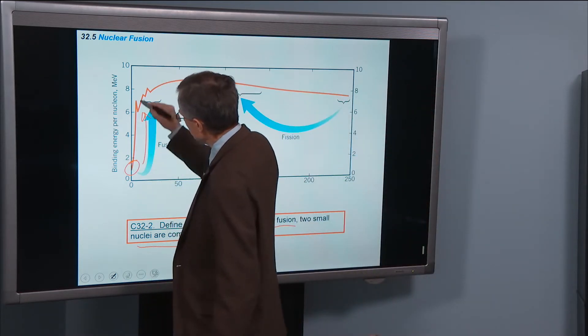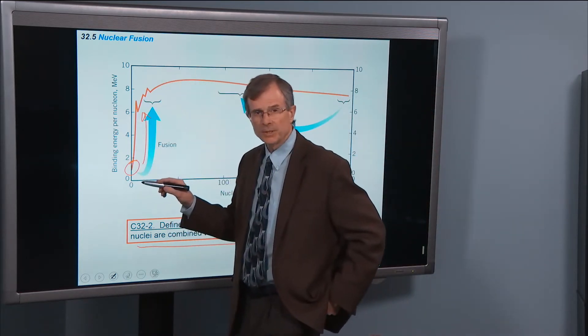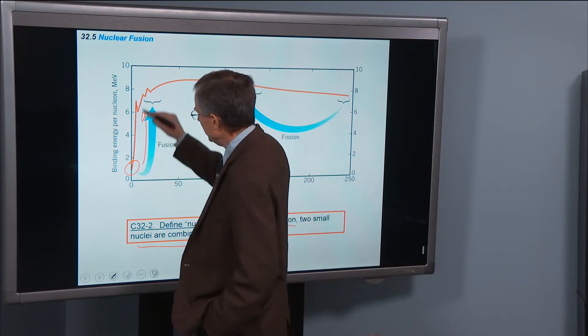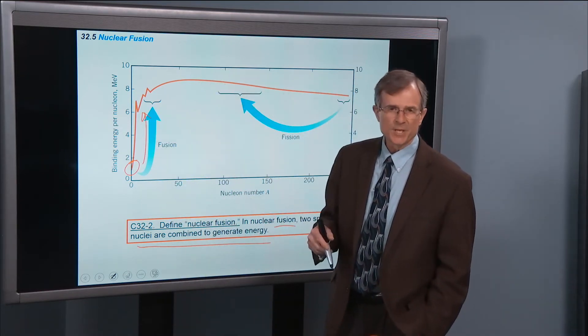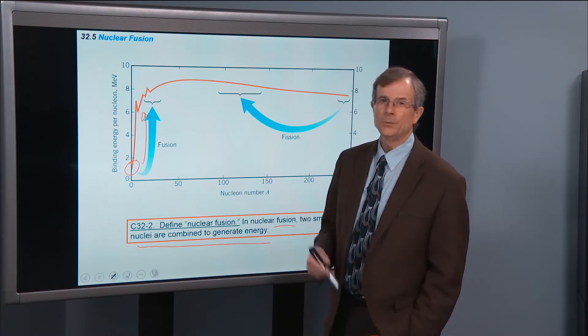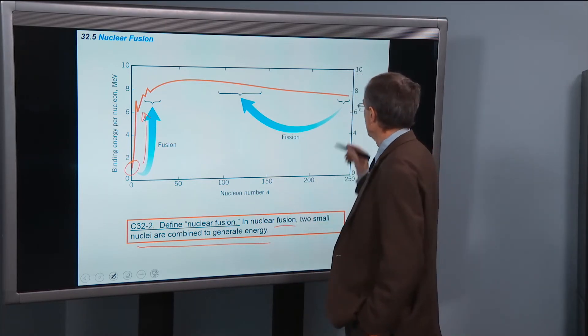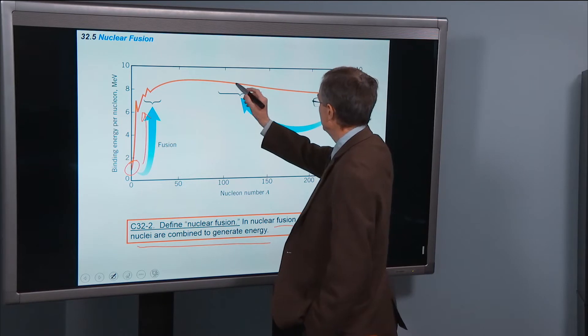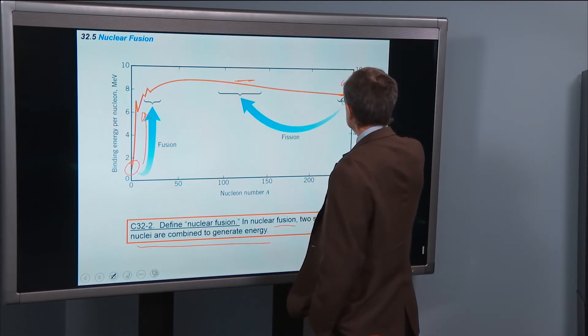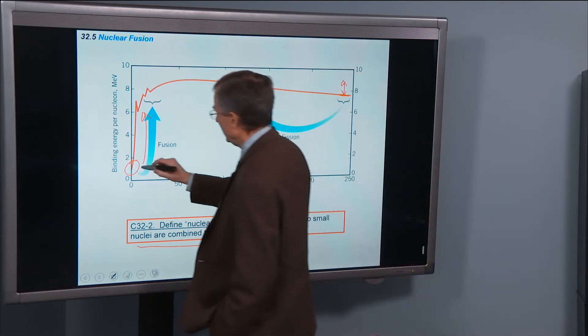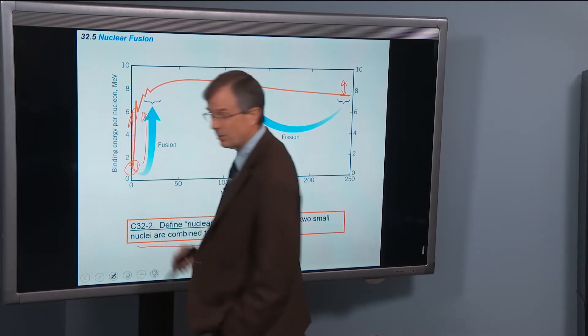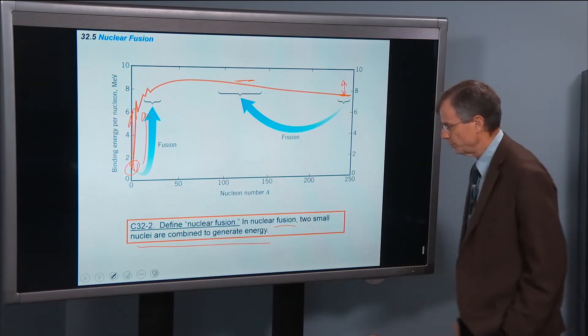Notice how steep this binding energy per nucleon is down here. There's a lot greater potential for energy gain in fusion than there is for fission. Whereas the difference in energy between these two is not that great compared to huge differences over here as you put things together.